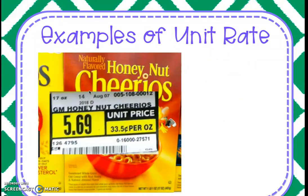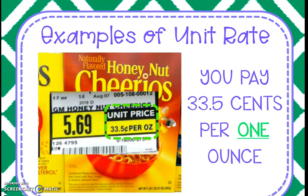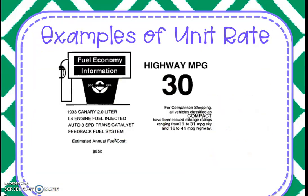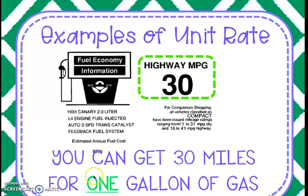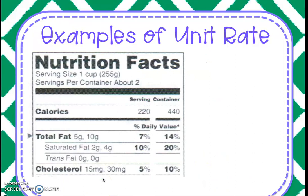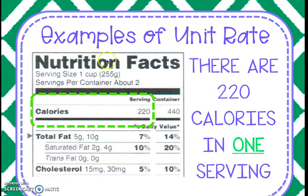Some real-world examples. Sometimes you might see this on the products that you buy in the grocery store. It might say $0.33.5 per ounce — that means you're paying $0.33.5 per one ounce of Cheerios. The whole price is $5.69, but over here they're telling you what you're paying per one ounce. Highway mileage gives us miles per gallon — 30 miles per one gallon of gas. Calories per serving: 220 calories per one serving, per one cup.